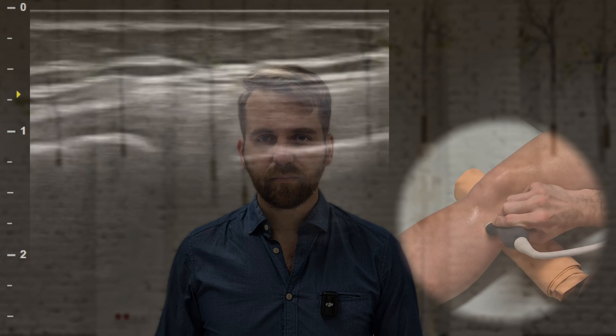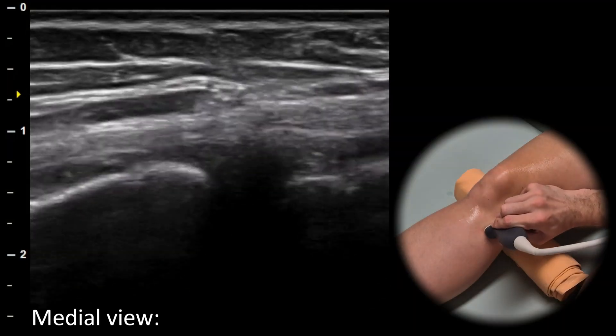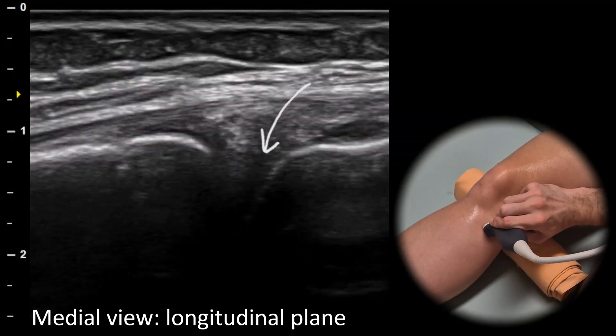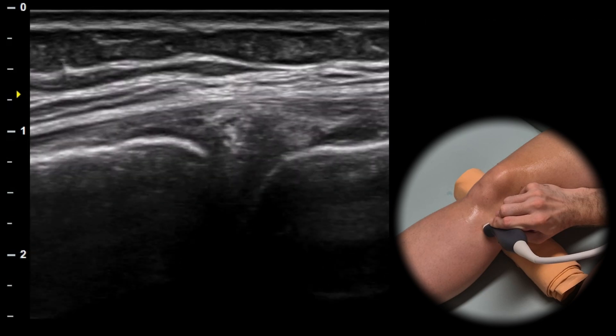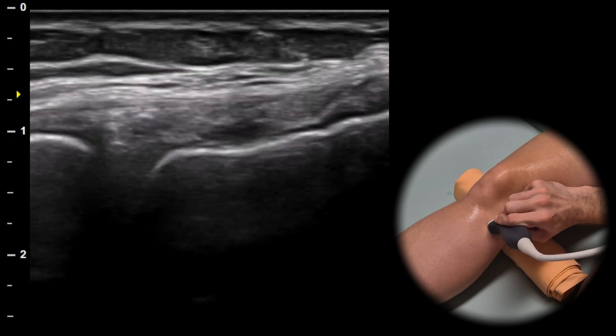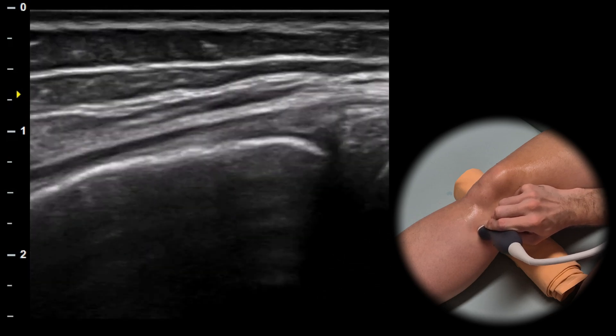The next view is the medial view. In the longitudinal plane we can identify the joint space between the femur and tibia. The triangular structure between these two bones is the medial meniscus. Superficially to the medial meniscus we can observe a fibrillar structure which is the medial collateral ligament. We can follow the medial collateral ligament as it attaches to the tibia.